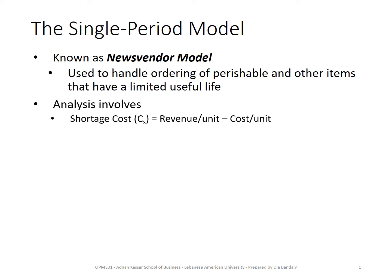The model entails two types of costs. We have the shortage cost, and we will denote it as CS — S for shortage.